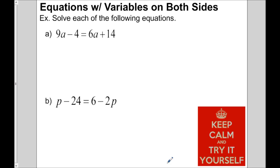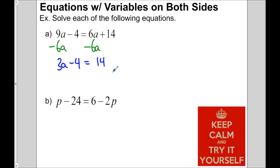We're going to get rid of the smaller variable term, which is 6a. So we take away 6a on both sides. That's gone, so 9a minus 6a is 3a, minus 4 equals 14. Now the variable is on the left, so we get rid of the minus 4 by adding 4 to both sides, giving us 3a equals 18.